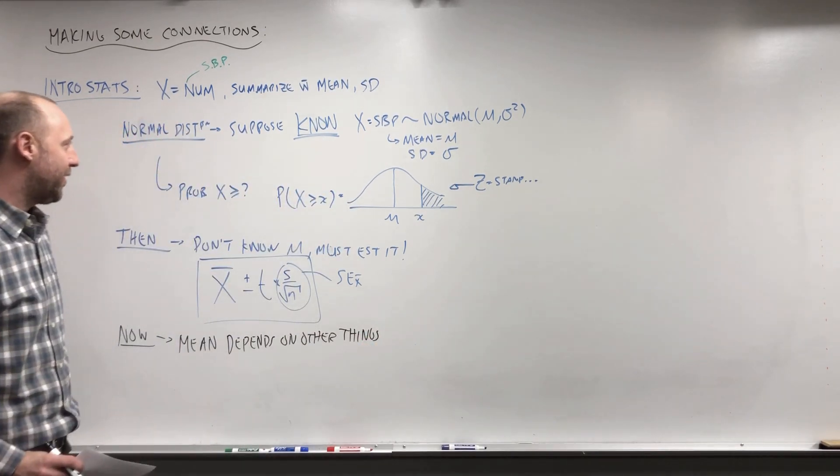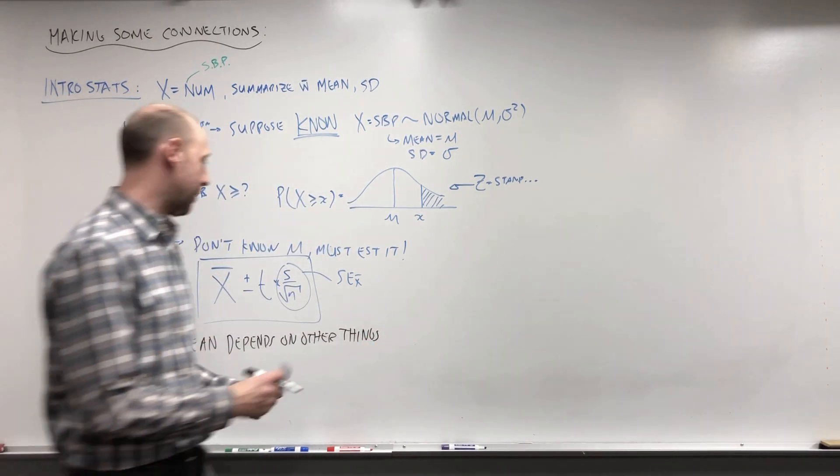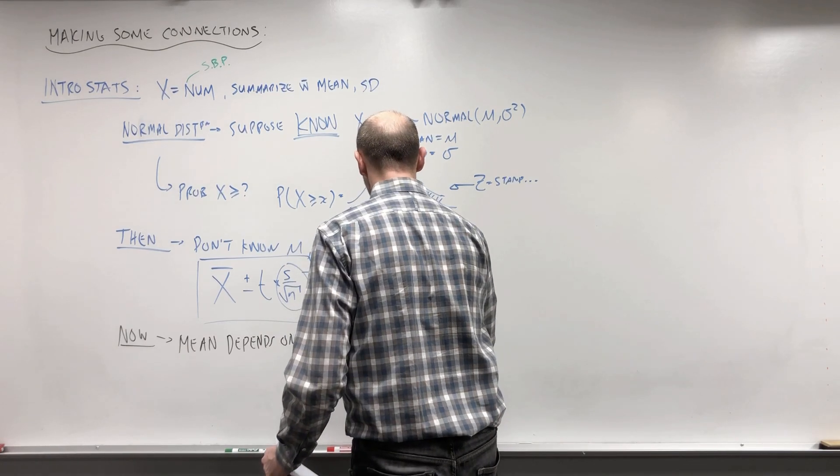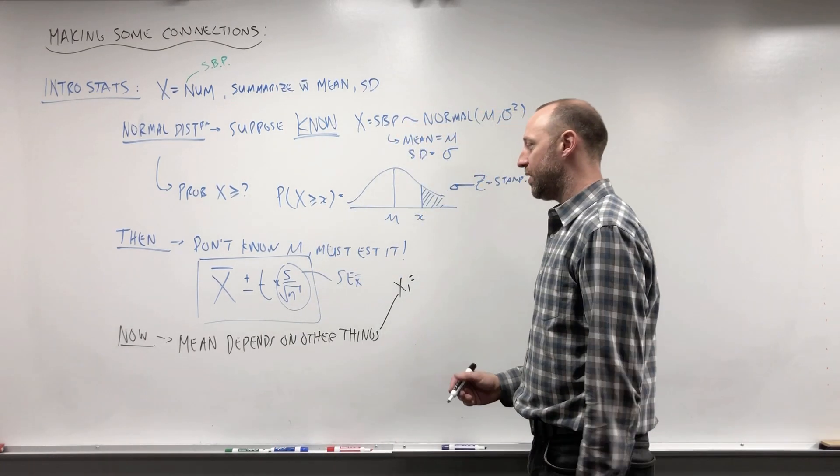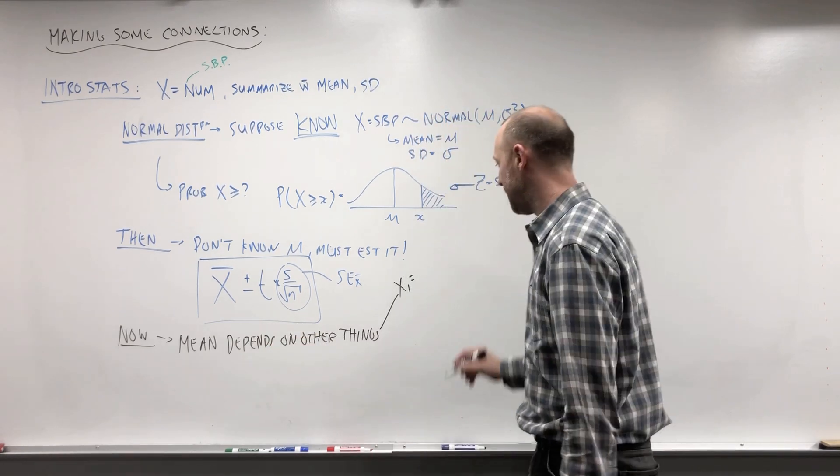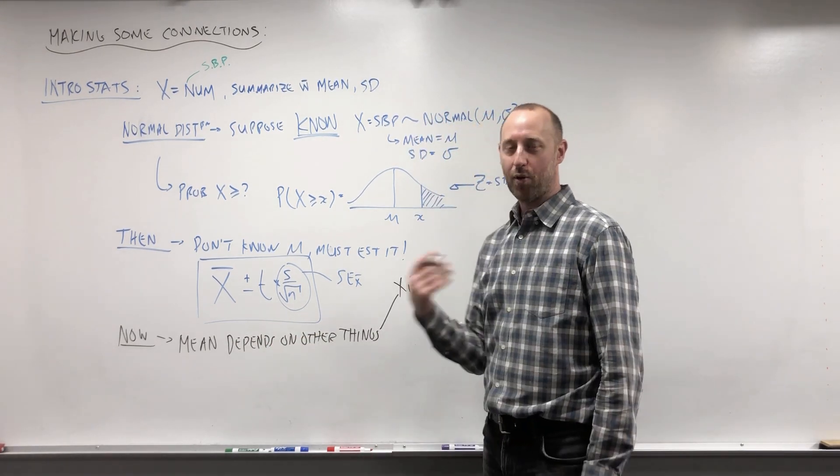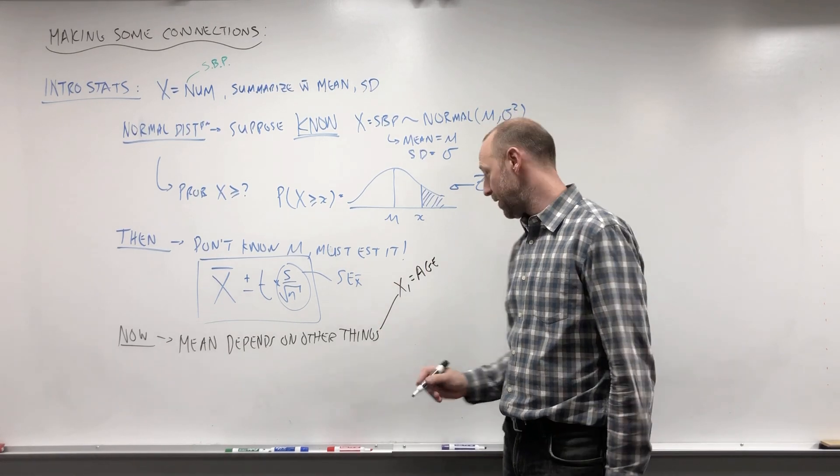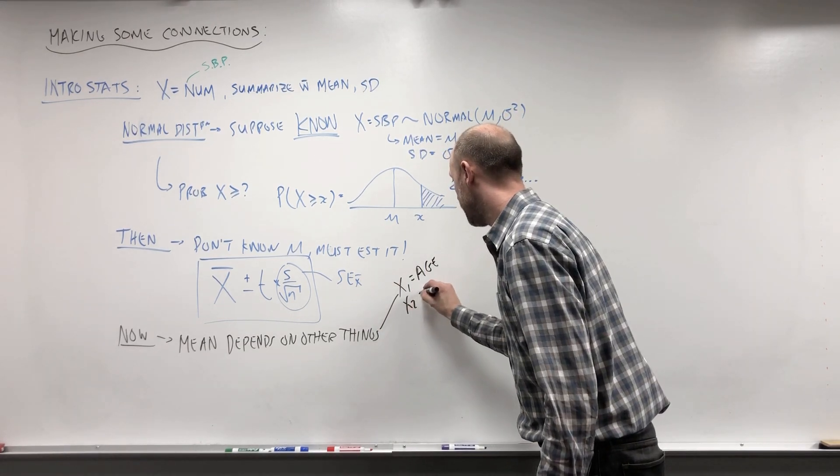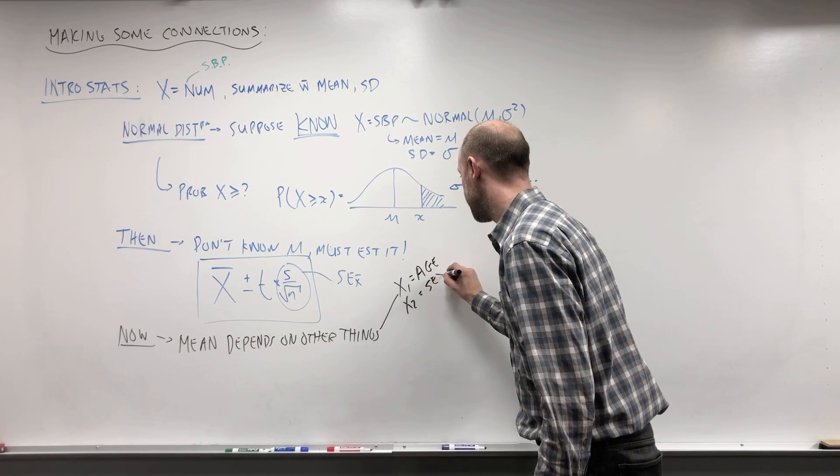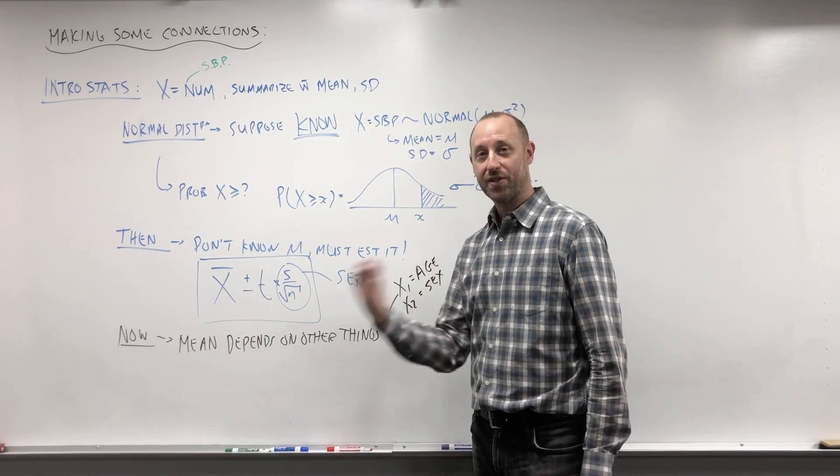For example, here we're talking about the mean systolic blood pressure, and we don't want to just say, well, here's the mean blood pressure for a certain population, because it may actually change depending on age. If people are older, their systolic blood pressure might be higher, or biological sex. Males' systolic blood pressure is higher than females'.